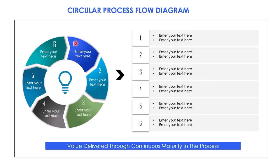You can start from one and move through two, three, four, five, six and show your audience that your product or solution evolved over the period. You can add a brief description about the feature or the unique thing that was added at each stage — there's a placeholder for that — and on the right-hand side you have enough space to add commentary.